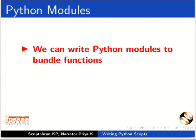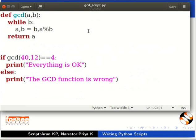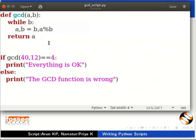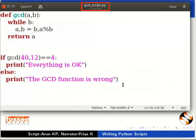We can write Python modules to bundle functions, and then make use of these functions by importing modules into other scripts. Let us first write a function and save it in a script. Open any text editor and type the code below. This Python module has a function to compute the GCD of two numbers. Please take care of the indentation. We have included a test case in the script, which will check the GCD function every time the script is run. Let us save the file as gcd_script.py in the current working directory.